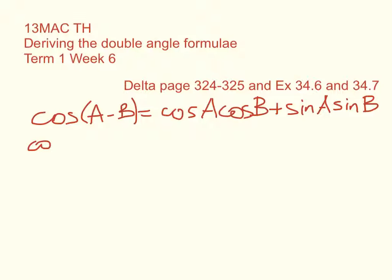Okay, and we've got the other trig compound angle formulae that come from that one. So the cos of A plus B is cos A cos B minus sin A sin B.